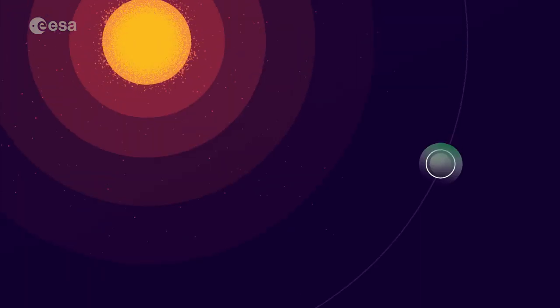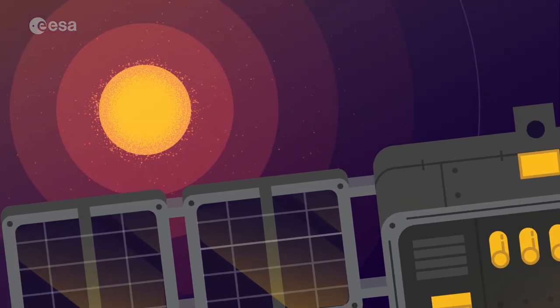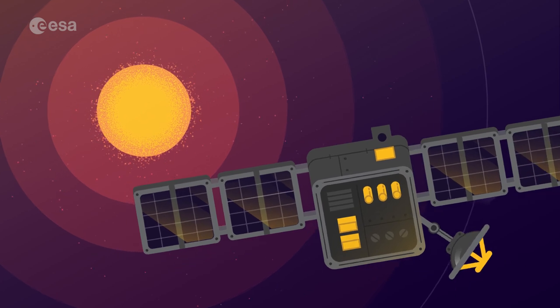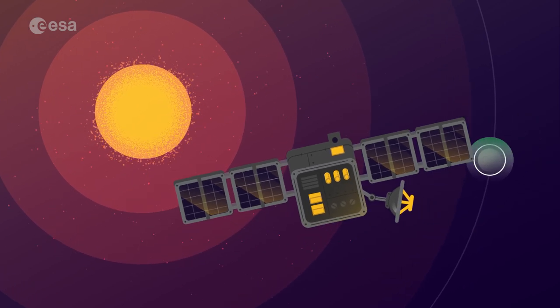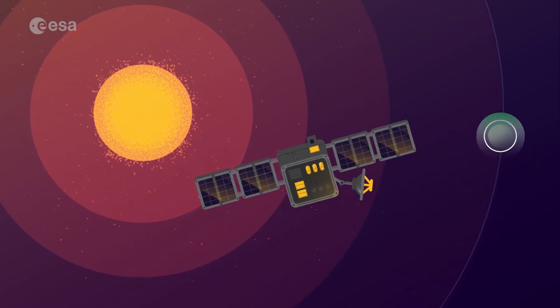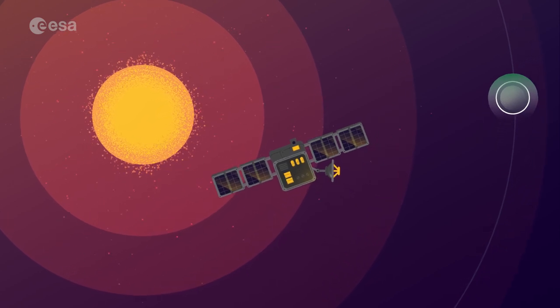ESA is planning a new mission, Lagrange, which together with space weather detectors on other satellites, will keep continuous watch over the Sun and provide early warning of potentially harmful activity.